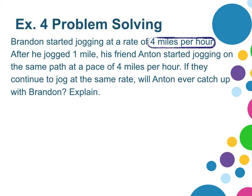Your life experience would probably tell you that Anton will not catch up with Brandon. But let's use algebra to prove this. Brandon's rate was 4 miles per hour. So we can use an equation to represent Brandon's jogging speed: y equals 4x. Now, let's look at the information given for Anton.